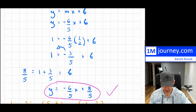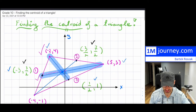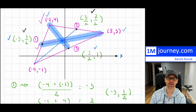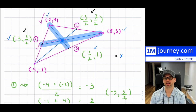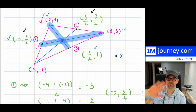This is exactly what a centroid is — simply taking the medians of a triangle, any triangle. When you take the medians, you find that the point of intersection is called the centroid. Thanks for watching. See you in a future video.